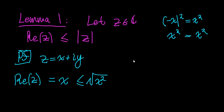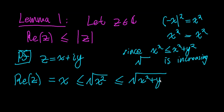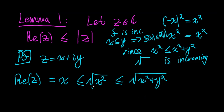Since x² ≤ x² + y², and since the square root function is increasing on its domain, this means √(x²) ≤ √(x² + y²). Remember: if f is increasing and x ≤ y, then f(x) ≤ f(y), and this is exactly the case for the square root function. And √(x² + y²) is equal to the modulus of z, so we're done with Lemma 1.